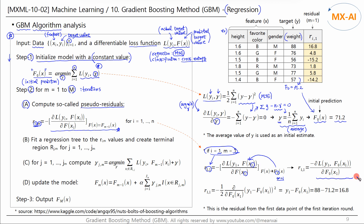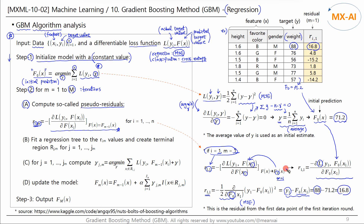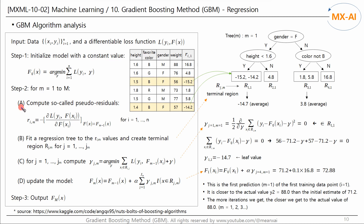Here, F0 is the predicted Y value from the previous round. Since the loss function L is mean squared error, differentiating with respect to F0 gives us: where Y1 is 88, the target Y value for the first data point, and F0 is the initial predicted value of 71.2. Therefore, the residual for the first data point is 16.8. That is, if you subtract the predicted Y value from the actual Y value, you get the residual. This is exactly the same way we calculated residuals in the previous video, and in Step A, the residuals for all data points were calculated accordingly.